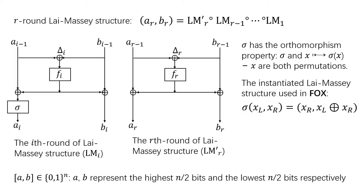Before introducing our attacks, we first introduce the definition of the Lai-Massey structure. We denote the R-round Lai-Massey structure as AR and BR, where the recurrence of the Lai-Massey structure is: AR equals AR-1 XOR FR(AR-1 XOR BR-1), and BR equals BR-1 XOR FR(AR-1 XOR BR-1).